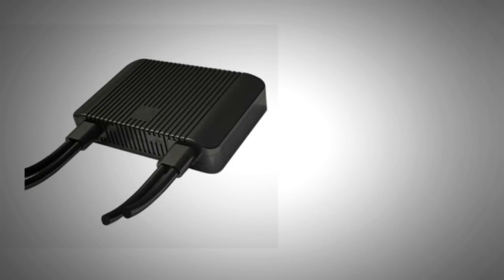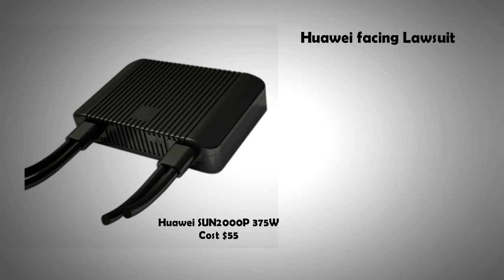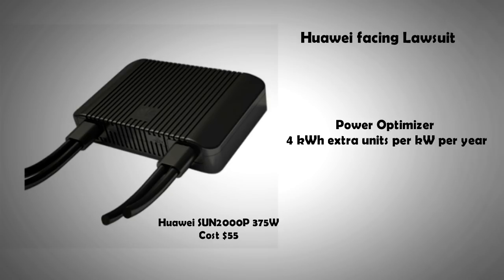Chinese manufacturers Huawei tried to launch their own power optimizers but were prevented by lawsuits. In terms of the output, considering all things equal, a DC optimizer on average would give 4 kilowatt-hour extra per year per kilowatt of installation compared to the micro-inverters.